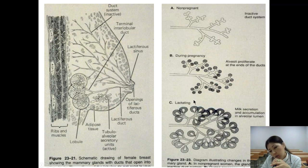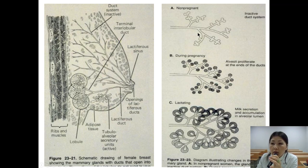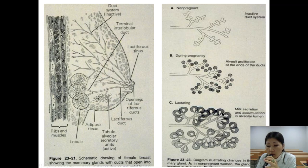Another diagram shows the differences between a non-pregnant mammary gland and the gland during pregnancy and lactation. In the non-pregnant gland the duct system is inactive. During pregnancy, alveoli proliferate at the ends of the ducts. In the lactating mammary gland, milk secretion and accumulation in the alveolar lumen occur, with increasing size of glandular structures.